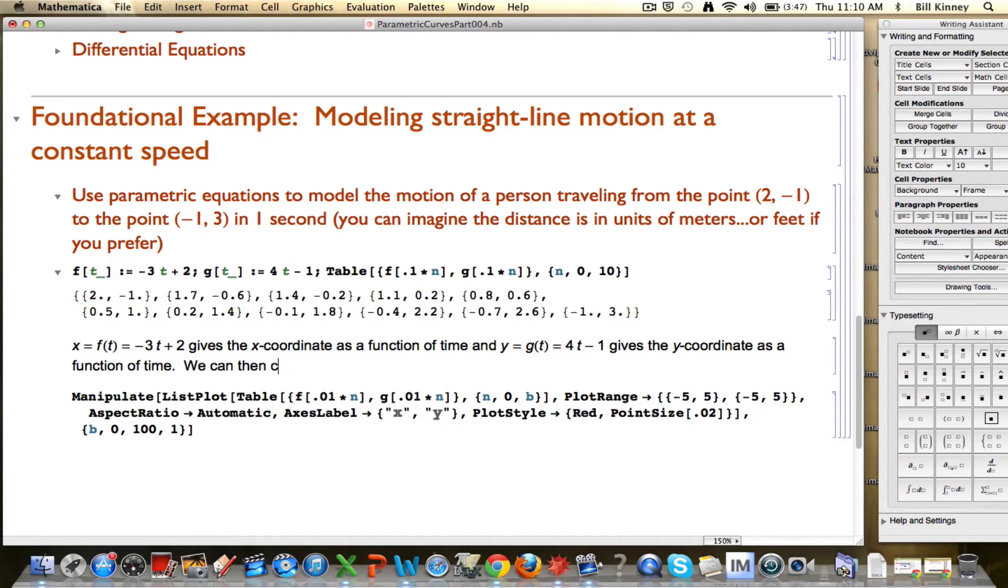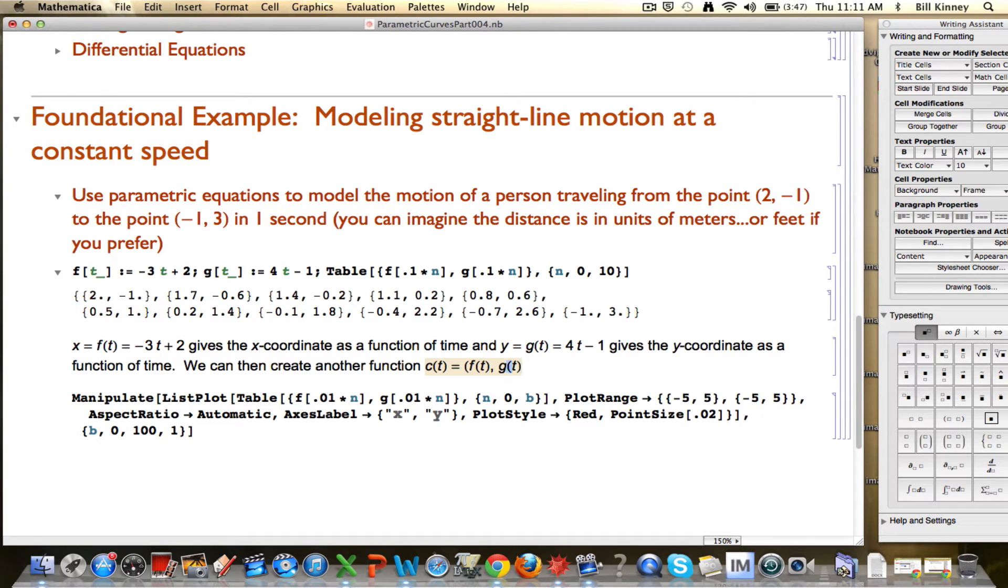We can then create another function, call it c(t), which is a function that takes a time t and gives you the corresponding point (f(t), g(t)) where the person is as time goes by. I'm using point notation here. Notice the parentheses around the f(t), g(t). Notice the comma between the f(t) and g(t). This is a moving point. You want to visualize this, you want to conceptualize it as a moving point. This gives the moving point as a function of time.